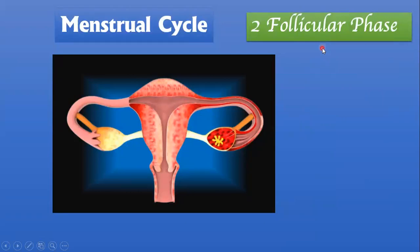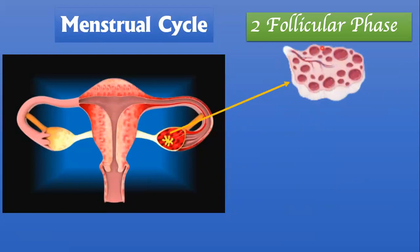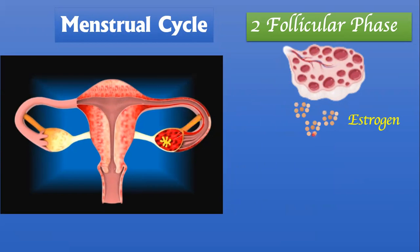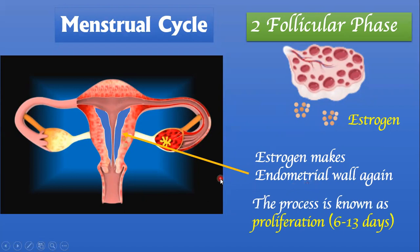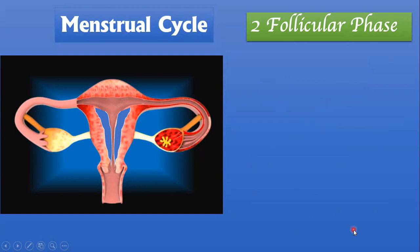Moving on to the follicular phase. During the follicular phase, the ovaries start producing the female sexual hormone known as estrogen. This estrogen starts rebuilding the endometrial wall — the wall that was lost during the menstrual phase — and so there is regaining of the endometrial wall. This process of endometrial wall formation is known as proliferation, which lasts from day 6 to day 13.